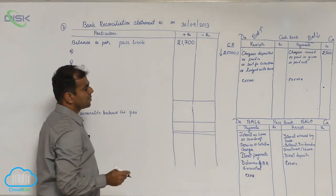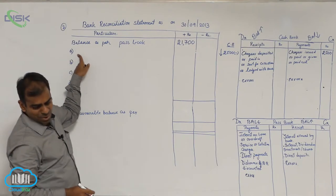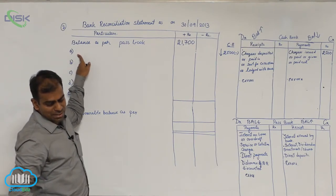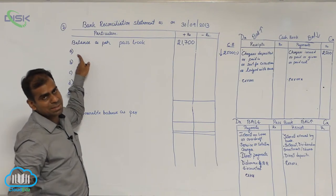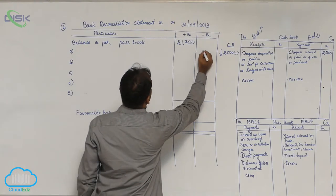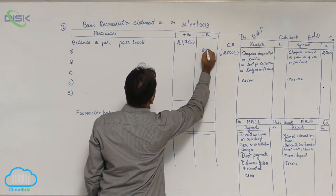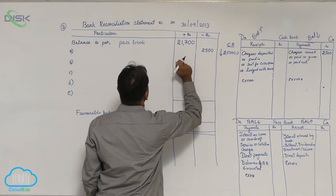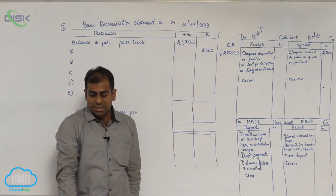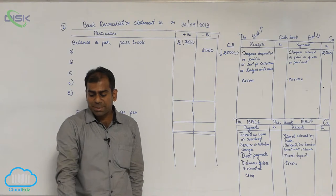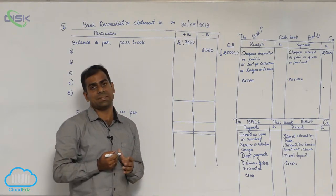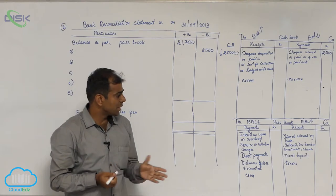Balance coming down means we should subtract. Write the same statement — cheques issued but not yet presented for payment. Since it has to be deducted, I am entering 2,500 in the minus column. Now let us see the next item: amount directly deposited by a customer, 3,000.